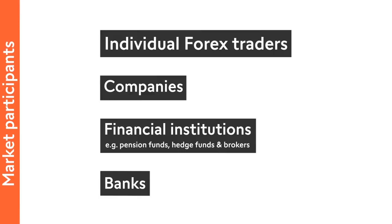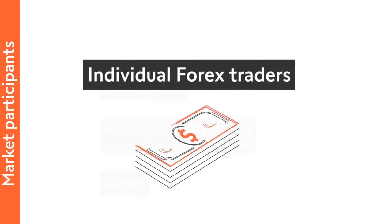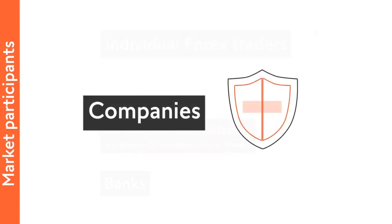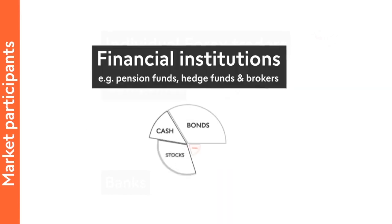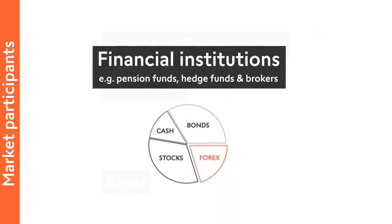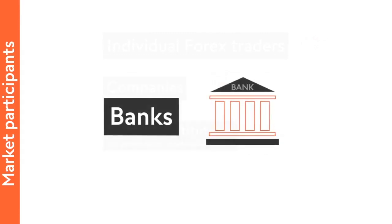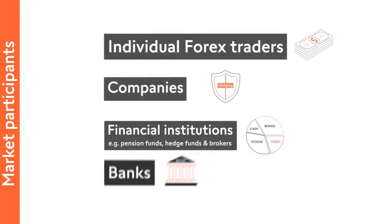The motivations of the market participants vary. Individual traders trade for profit. Manufacturing companies may wish to protect physical investments by hedging. Financial institutions may also hedge or simply invest, and central banks may wish to affect prices and trade volume.